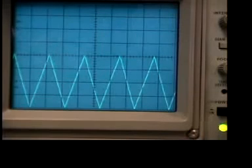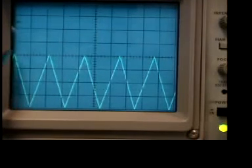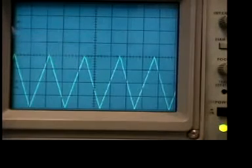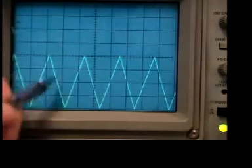And another common mistake is to count the cycles like this: one, two, three, four, five cycles. No, that's five peaks. Rather, it's one cycle, two cycle, three cycle, four cycles.